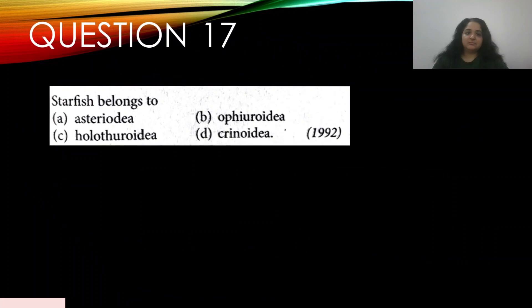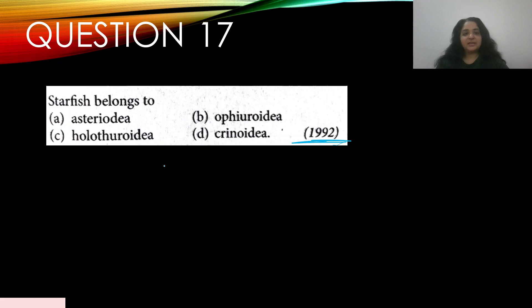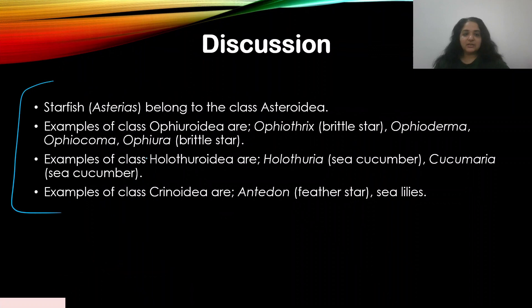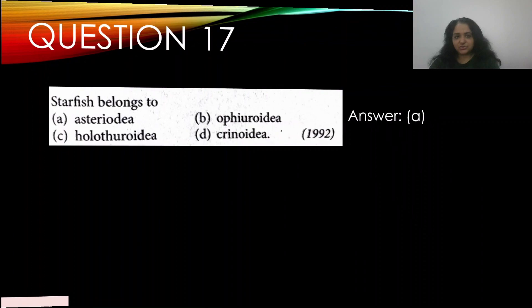Question number seventeen: starfish belongs to — appeared in 1992 — A) Asteroidea, B) Ophiuroidea, C) Holothuroidea, D) Crinoidea. Starfish belongs to the class Asteroidea. The answer is A. The other classes within Echinodermata include Ophiuroidea, Holothuroidea, and Crinoidea, each with different example organisms.